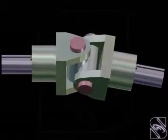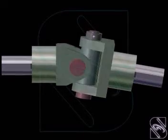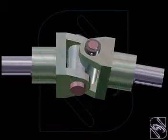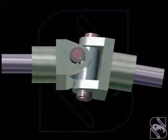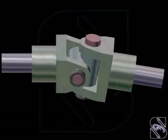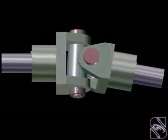This animation presents to you the application of universal coupling in the propeller shaft of the automobile. Here, the universal coupling functions as a constant velocity joint.